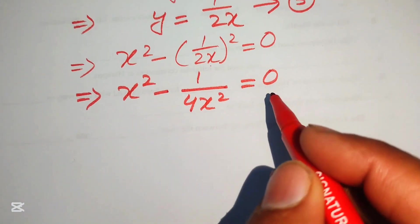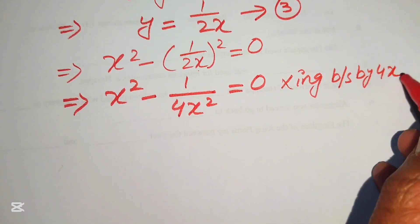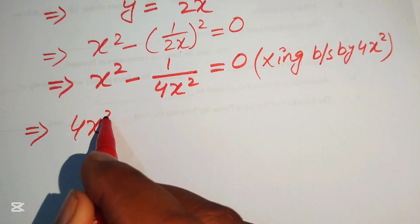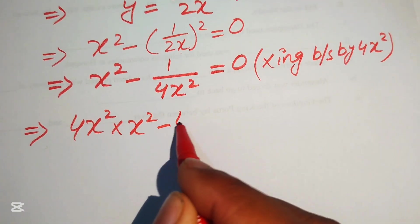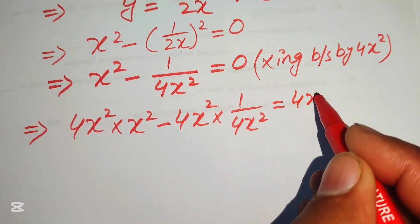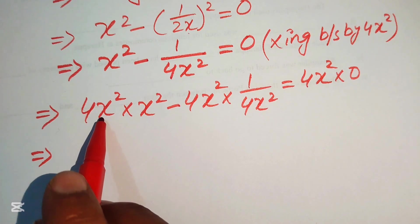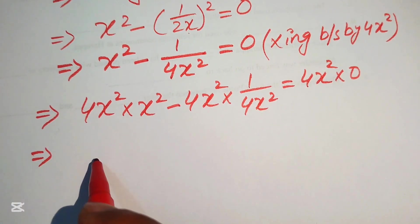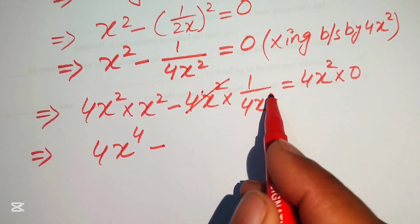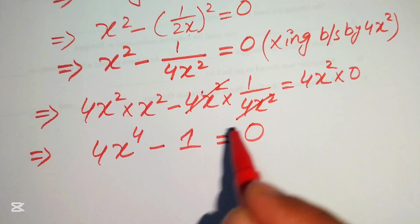Multiplying both sides by 4x² gives 4x⁴ - 1 = 0. The 4x² terms cancel in the second term, and 4x² times zero equals zero, leaving us with 4x⁴ - 1 = 0.